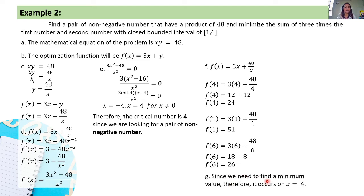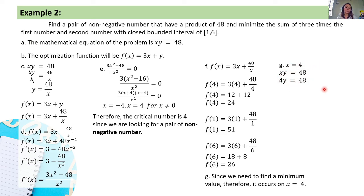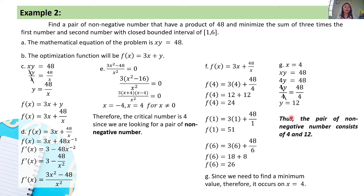Since we need to find the minimum value, the minimum occurs at x = 4, where f(4) = 24 — the smallest computed value. Using x = 4, solve for y: 4y = 48, so y = 12. Thus, the pair of non-negative numbers consists of 4 and 12.